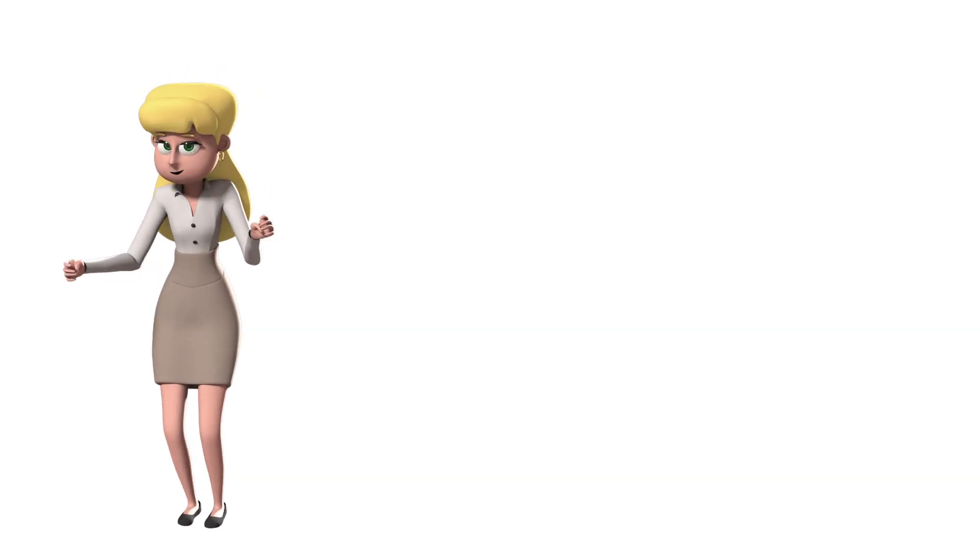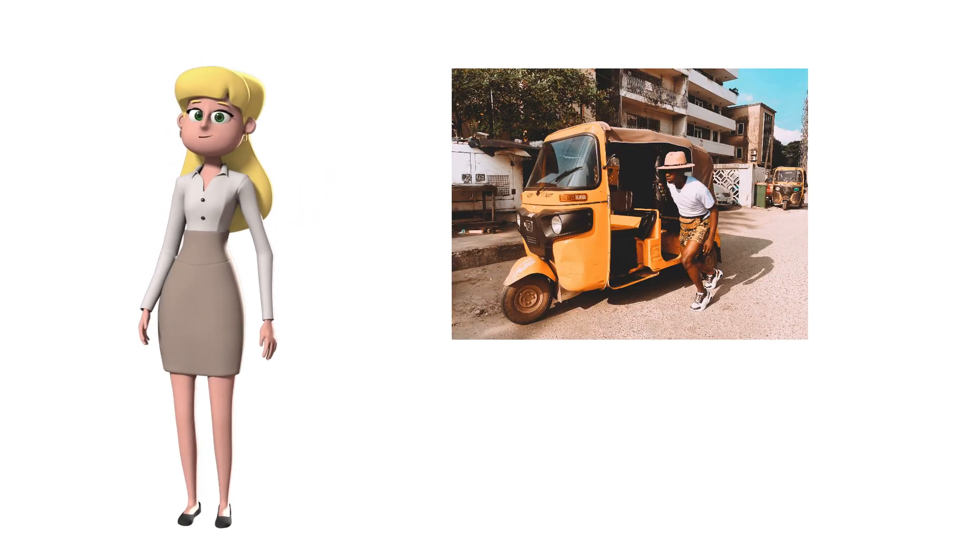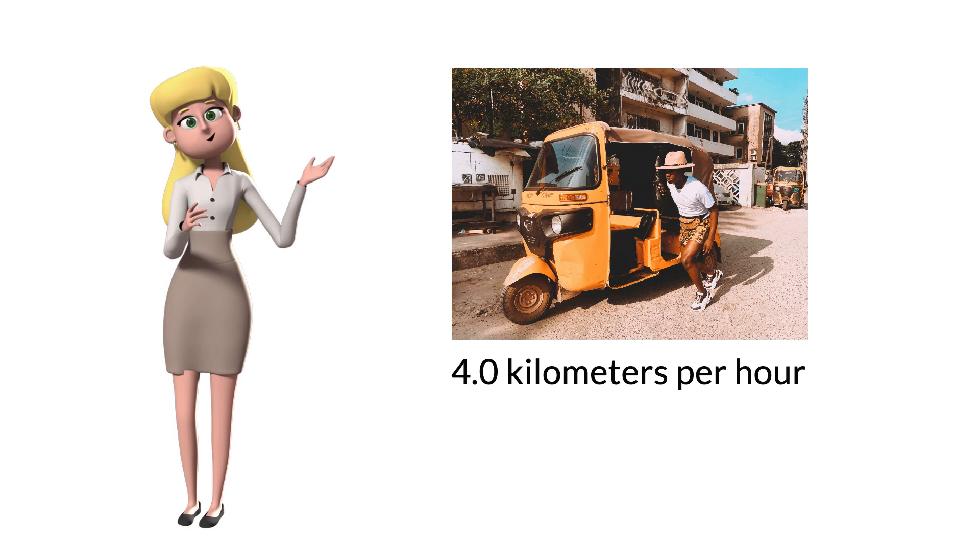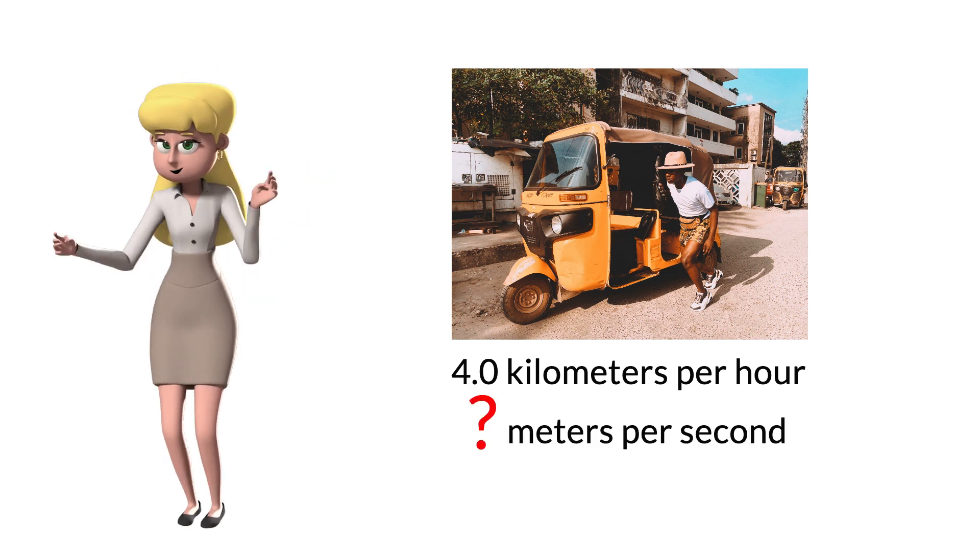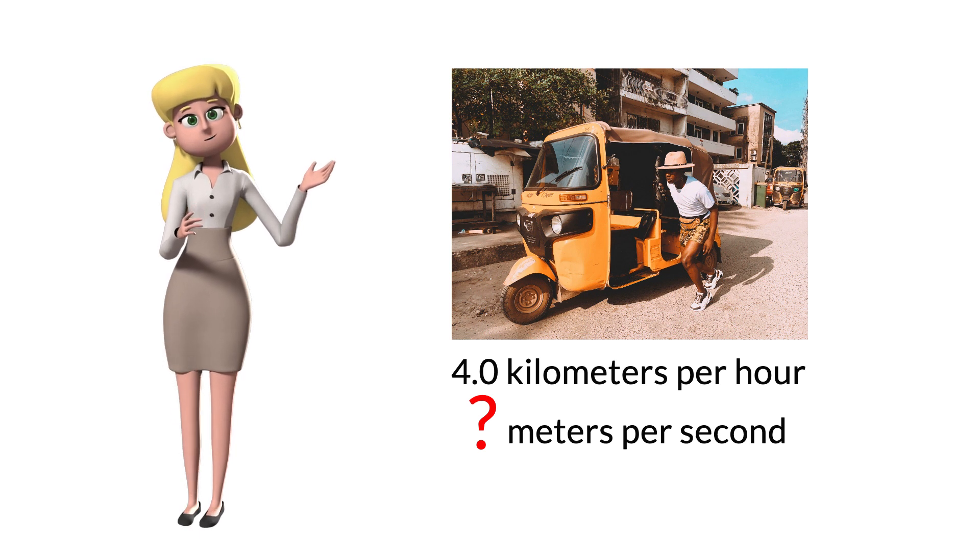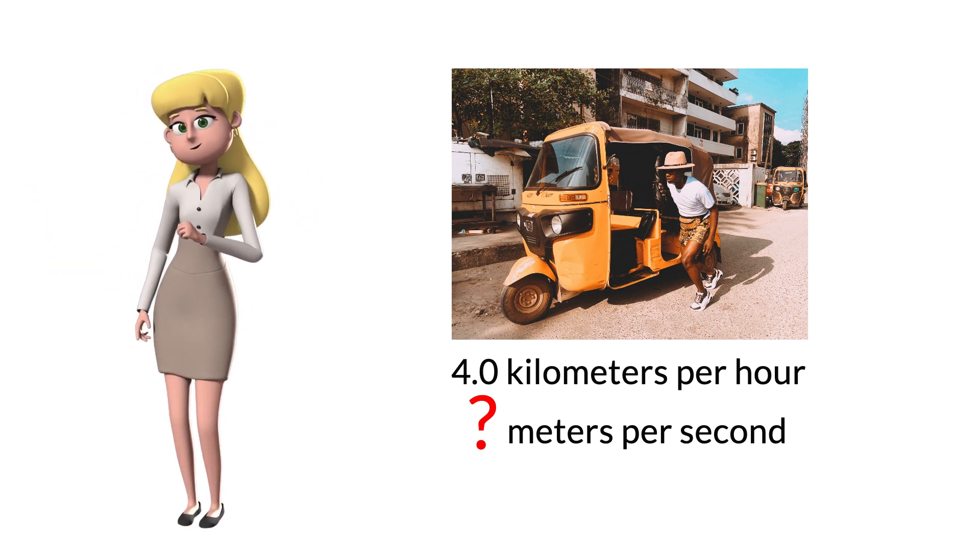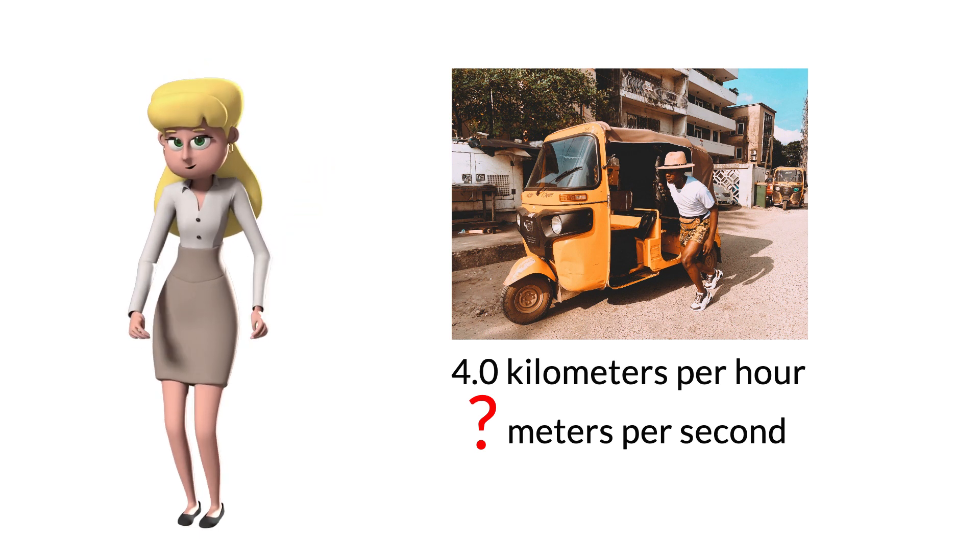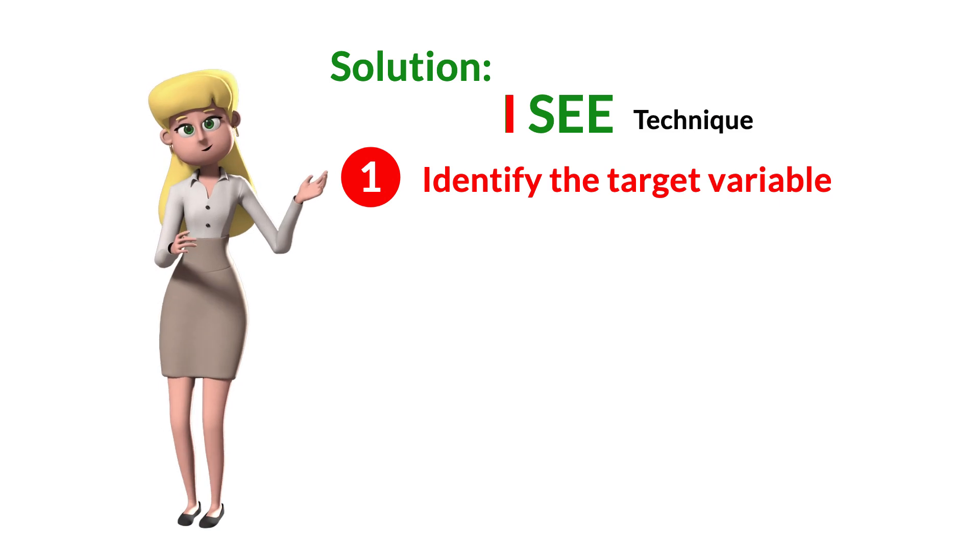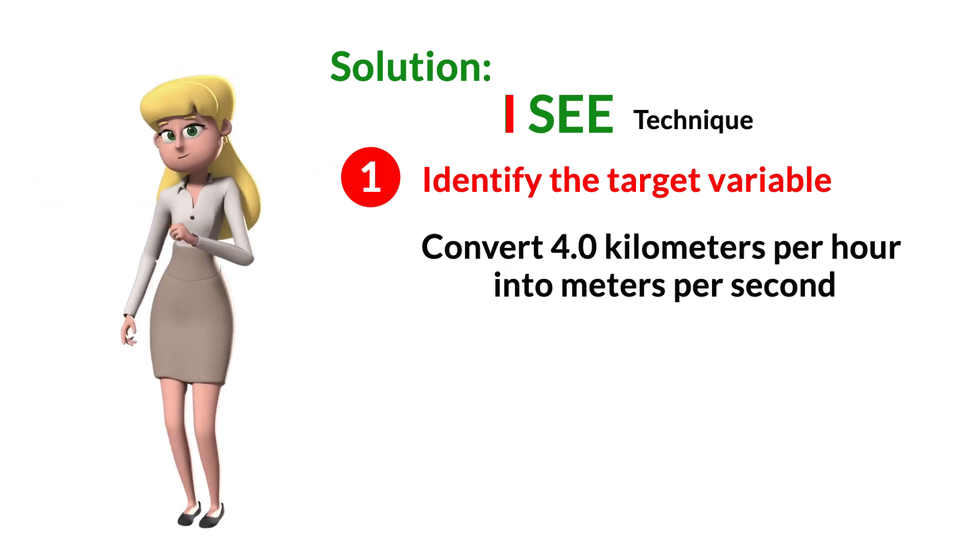Now that we already know the ISEE technique, we can now solve our sample problem. If a vehicle could run at a max of 4.0 kilometers per hour, express this speed in terms of meters per second. Since this problem is purely conversion of units, we will not be looking for the relevant concept to identify. Let's proceed to identifying the target variable. Step number one: Identify the target variable. Convert 4.0 kilometers per hour into meters per second.